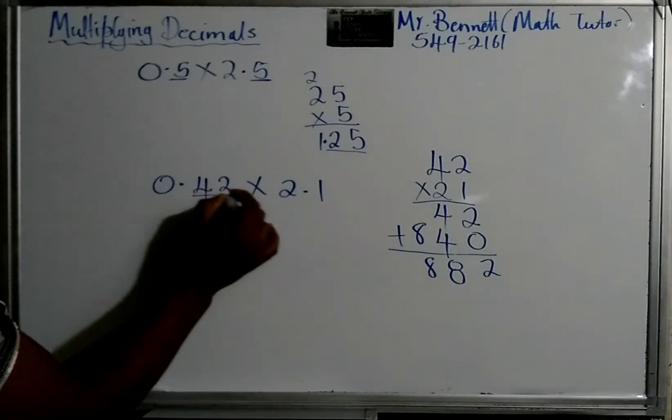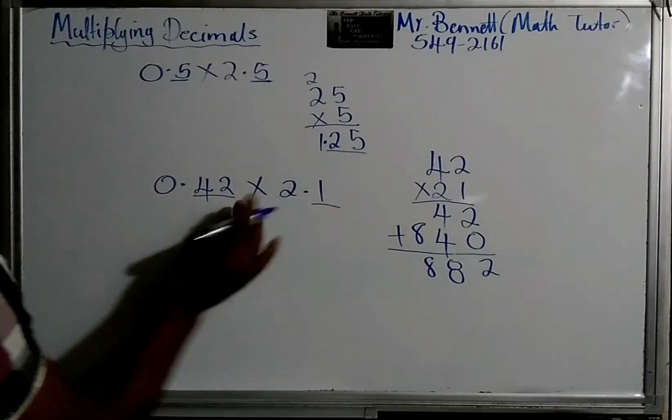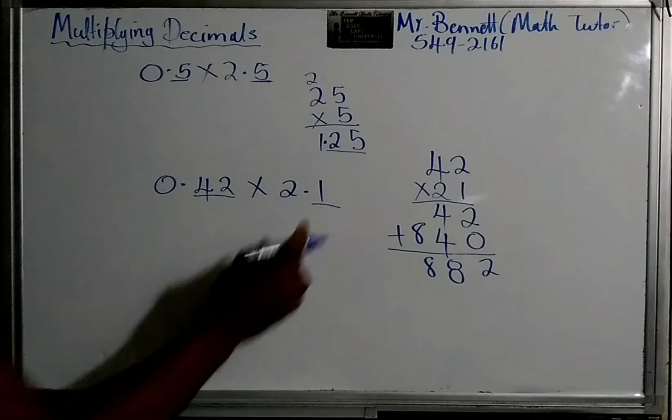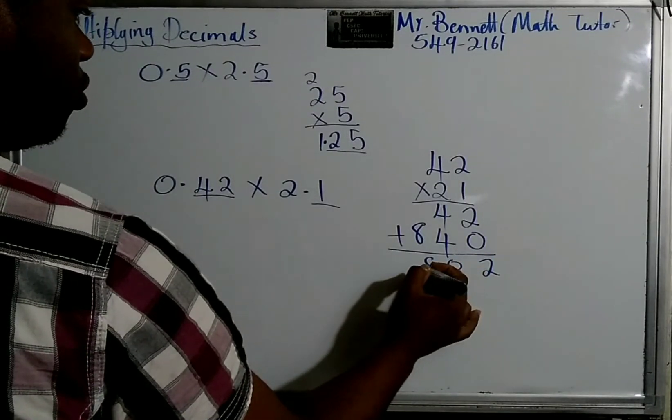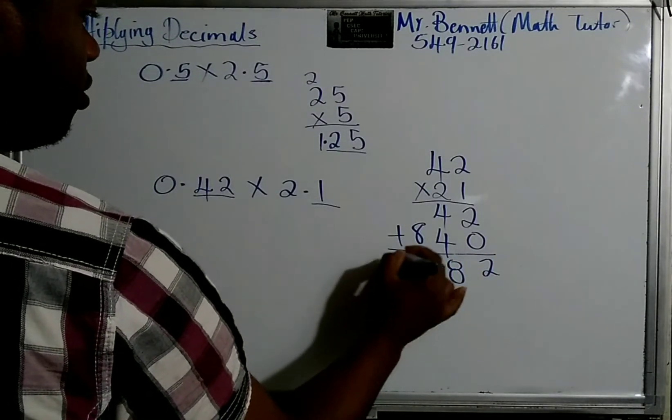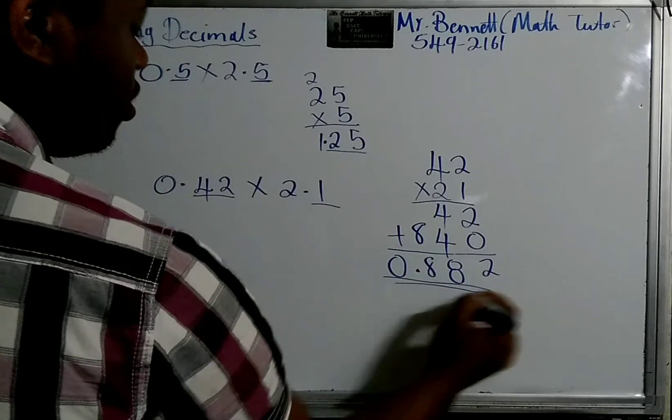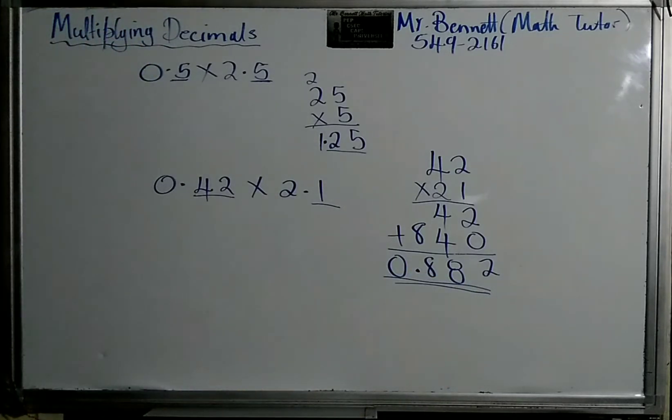And then, we count the number of decimal places. So we have 1, 2, 3. So, 1, 2, 3. We can put a 0 in front of this. So that's how we multiply decimals.